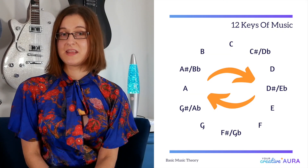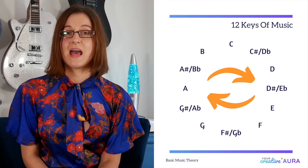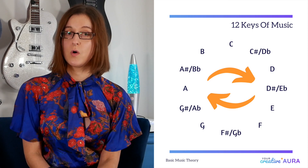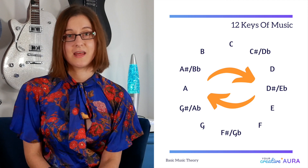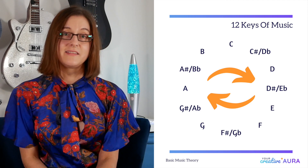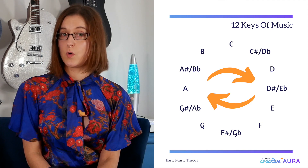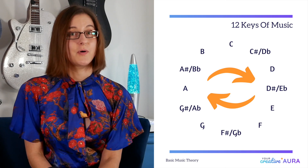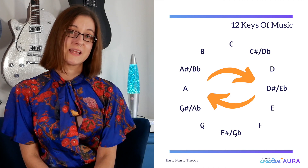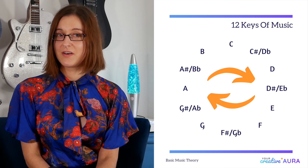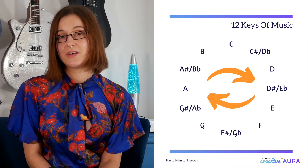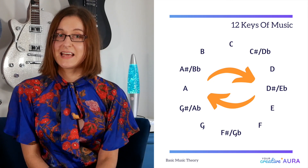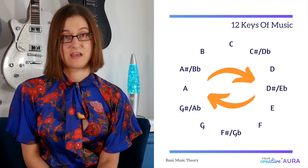Now here we have the 12 keys of music. Let's start with A, and then next we have A sharp or B flat, then B, then C, then C sharp or D flat, D, D sharp or E flat, E, F, F sharp or G flat, G and lastly G sharp or A flat.